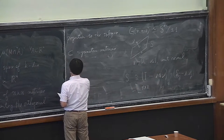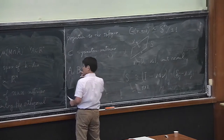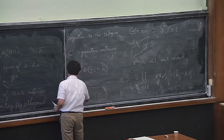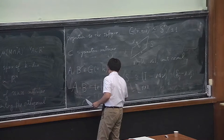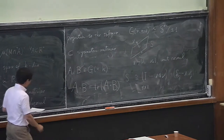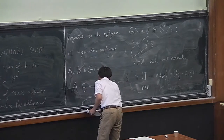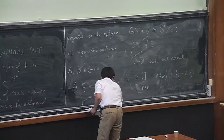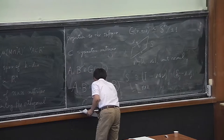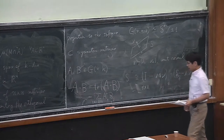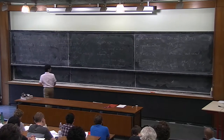For a and b in G(n,k), I define a · b to be the trace of the matrix product a·b. In component form, since these are symmetric matrices, that is sum_{i,j} a_{ij} b_{ij}. This is notation I will use throughout the talk.